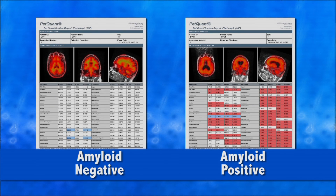We can color-code each row to show whether it is out of the range of normal. On this left scan, almost everything is within the range of normal—everything is white. Nothing's out of the range of normal. Whereas on this scan, you can see the whole report turning red. My goal is to get to the point where my 7-year-old daughter would be able to say, 'Daddy, that's an amyloid-positive scan' or 'that's an amyloid-negative scan.' We call that de-skilling of the reading process.